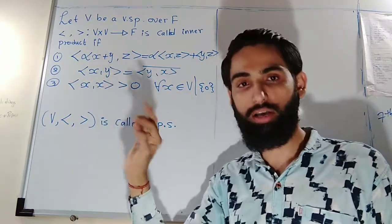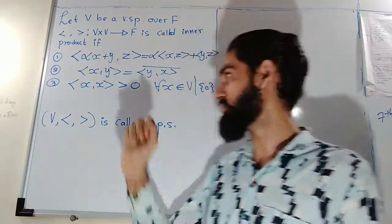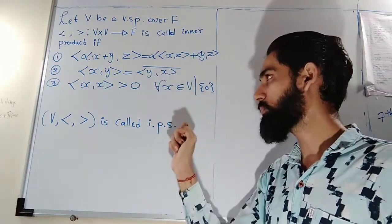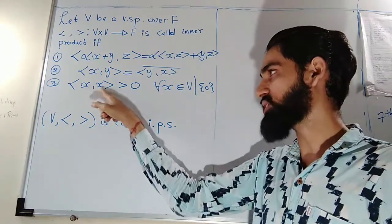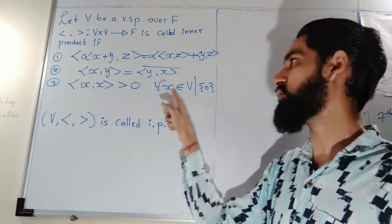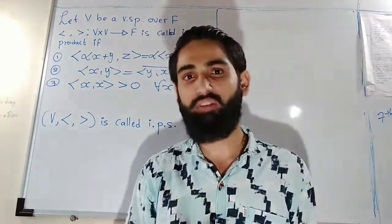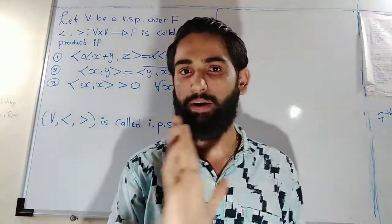Second is if you change the order, you will get conjugate as the answer. That means inner product XY is same as inner product YX conjugate. Also, the inner product of X with X is strictly greater than zero for non-zero X inside vector space V, and vector space V with that inner product is called inner product space.